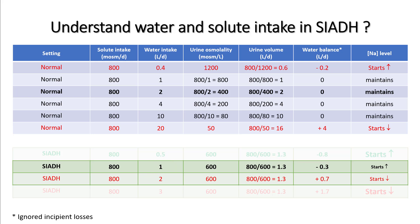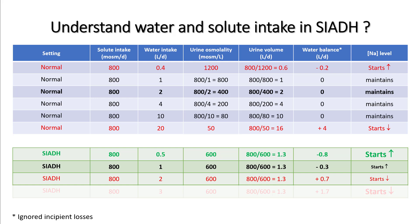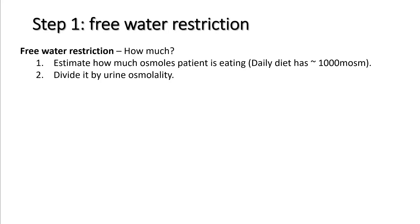If you want the sodium to rise faster, you can use stricter water restriction — say 0.5 liters — giving a daily water balance of around negative 0.8. The most important intervention in SIADH is free water restriction.